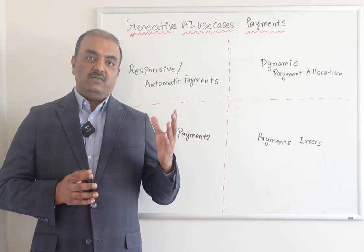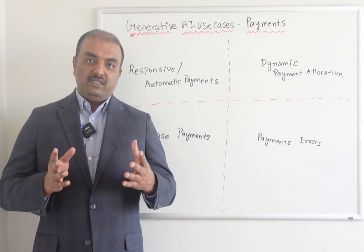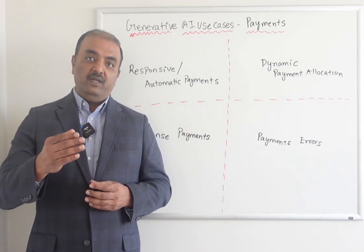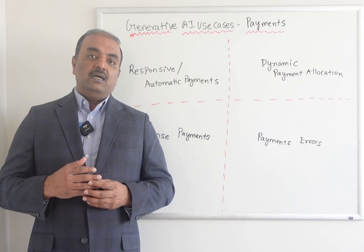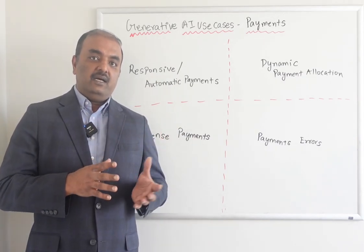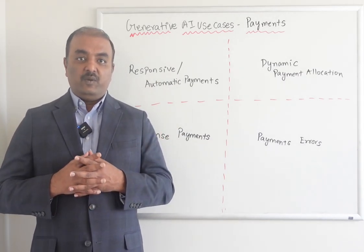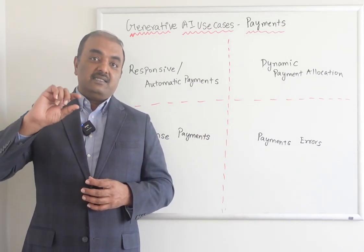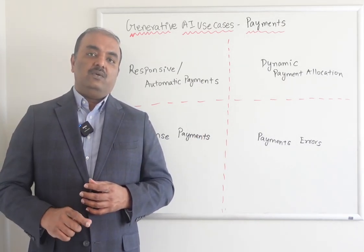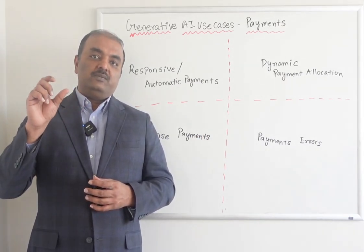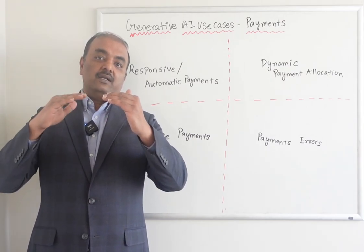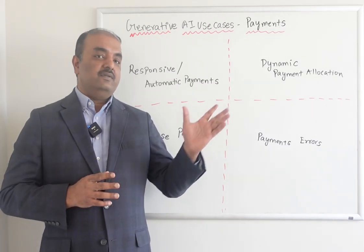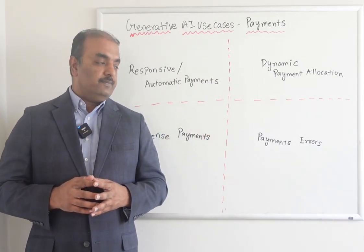Imagine you have customers who are very specific and they want payments to be first applied to late fees and then taxes. Based on historical data and the customer profile, AI can know the details of the payments and adjust the payment allocation plan so that only for those customers the allocation order can be changed, instead of it being static.